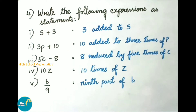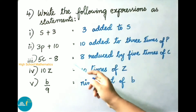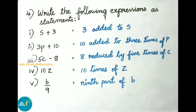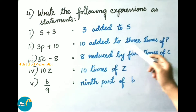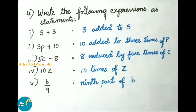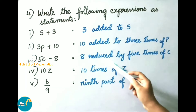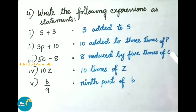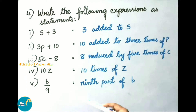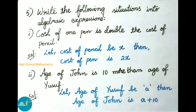First, s plus 3: 'three added to s.' Second, 3p plus 10: 'ten added to three times of p.' Third, 5c minus 8: 'eight reduced from five times of c.' Fourth, 10z: 'ten times of z.' Fifth, b by 9: 'ninth part of b.'